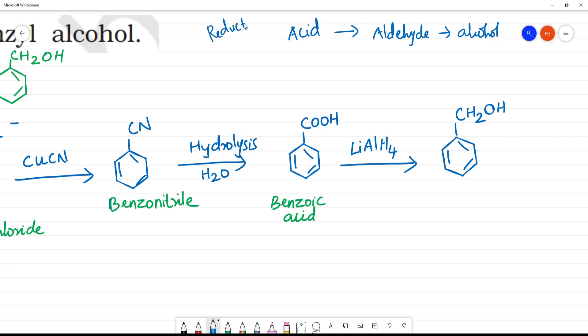Reduction. This is carboxylic acid. The COOH group converts to CH2OH group. So what is this? This is benzyl alcohol.